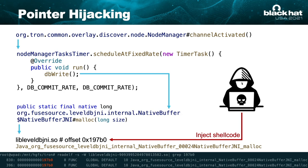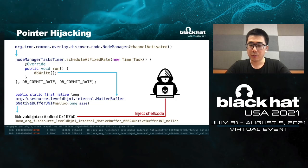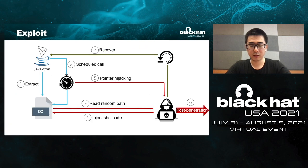Now we can overwrite the JNI library at runtime. The last question is how to hijack the pointer. JavaTron registers a timer task for LevelDB write on initialization. The method db_write calls the JNI method native_buffer JNI malloc. So we can inject shellcode to the offset address of JNI malloc when the timer task is executed. After the exploit, the last step is recovering the program context to prevent a crash. For step six — post-penetration for real money — I hand over to my co-speaker Wu Zokai.